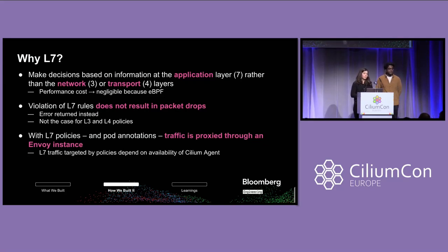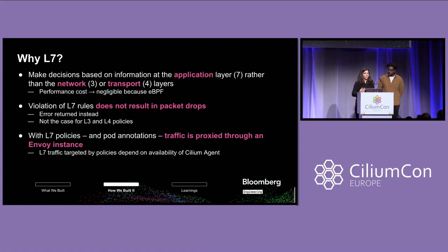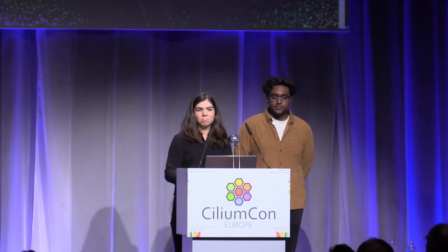We chose L7 for a few reasons. It allows us to make decisions based on information at the application layer rather than at the network or transport layer. The performance cost of doing this ends up being negligible because of eBPF and its magic. The violation of L7 rules doesn't result in a packet drop, which means we're able to pick up when there's an error and that traffic is not able to leave the node. With L7 policies and pod annotations, that traffic is proxied through an Envoy instance, which means L7 traffic depends on the availability of the Cilium agent itself. One piece of YAML, one Cilium network policy — we built this valuable business feature.